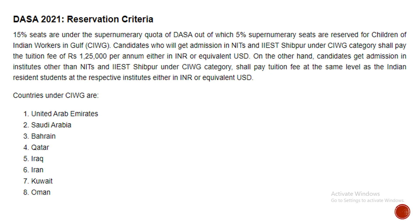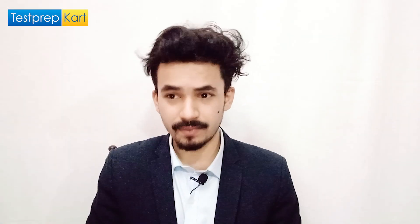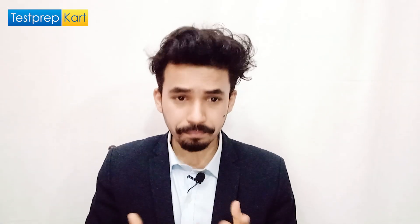The reservation criteria, as mandated by MHRD and DASA, states that 15 percent of seats are reserved under DASA, out of which 5 percent are reserved for CIWG candidates. The tuition fee is 1 lakh 25 thousand per annum, payable either in INR or USD. The countries under CIWG are United Arab Emirates, Saudi Arabia, Bahrain, Qatar, Iraq, Iran, Kuwait, and Oman — these are children of Indian workers in Gulf countries.